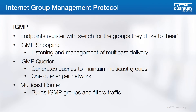The IGMP protocol allows devices to register for the multicast transmissions they would like to receive. The mechanics of this process rely on a few different aspects of the protocol. IGMP snooping is the feature you enable on the switch to provide this functionality, allowing for the registration of groups with the switch. An IGMP querier is then required to maintain the list of which endpoints would like to receive which multicast streams. There can only be one querier per network, and it asks each device on a regular basis what multicast groups it wants to be a part of.